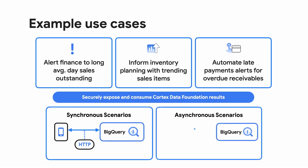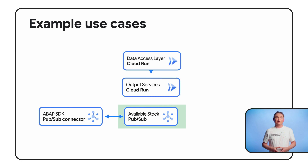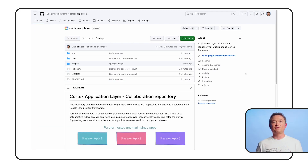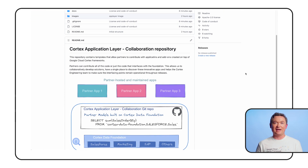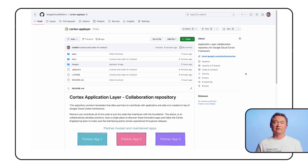For example, you could use a synchronous call to complement master data when creating it in a system of record like SAP, or publish a message to a PubSub topic for stock requirements for your different demand planning systems to subscribe and consume. To close the loop, if you have an SAP system, you can also subscribe to this PubSub topic with stock requirements using Google Cloud's ABAP SDK, which is a great complement to writing back insights produced by Google Cloud machine learning models into your SAP applications. You will find sample code for this integration with the ABAP SDK and other applications from Google Cloud partners in the application layer GitHub repository, linked below.